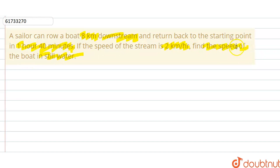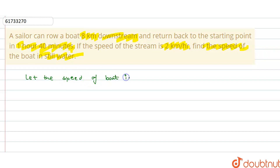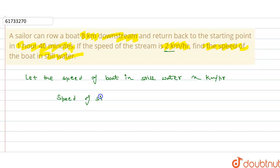We will take the speed of the boat in still water as x. We are given that the sailor goes 8 km downstream and returns in 1 hour 40 minutes. The speed of the stream is 2 km per hour.